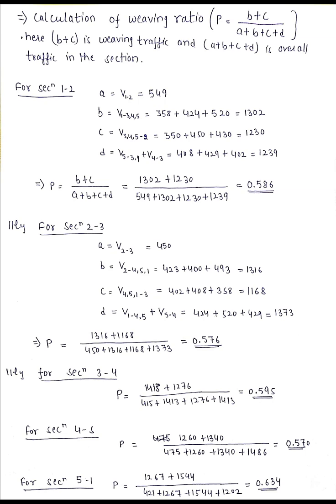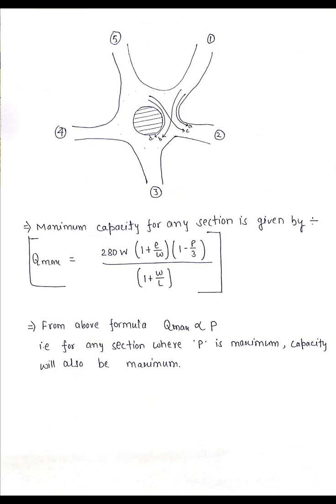We are starting from section 1-2, so it is easy to calculate all the four terms a, b, c, and d. As I have directed also in this picture, you can see the volume of traffic which is coming from the first leg to the second leg is 'a'.